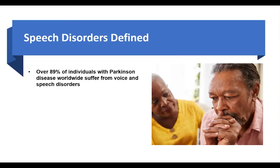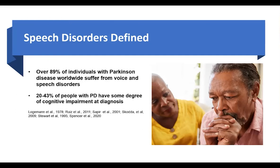Over 89% of people with Parkinson's disease worldwide will have changes in voice and speech — it is a very common symptom. A little less common are changes with cognition, affecting 20 to 43% depending on participants and years of diagnosis. I bring that up because cognition is obviously very important for successful communication.